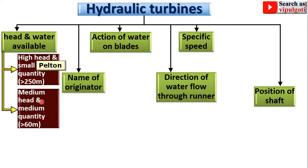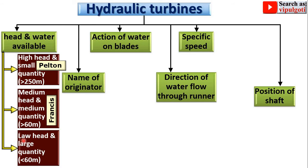Next, medium head and medium quantity: if the head is more than 60 meters, it is called a medium head turbine. The example is the Francis turbine. Next, low head and large quantity: generally a head less than 60 meters is called a low head hydraulic turbine. The best example for low head and large discharge is the Kaplan turbine.